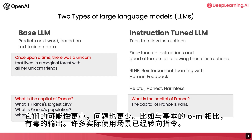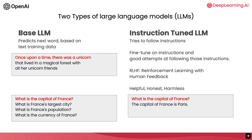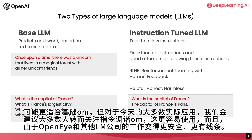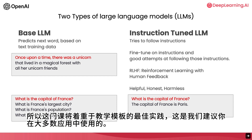A lot of the practical usage scenarios have been shifting toward instruction-tuned LLMs. Some of the best practices you find on the internet may be more suited for a base LLM, but for most practical applications today, we would recommend most people instead focus on instruction-tuned LLMs, which are easier to use and — because of the work of OpenAI and other LLM companies — becoming safer and more aligned. So this course will focus on best practices for instruction-tuned LLMs, which is what we recommend you use for most of your applications.